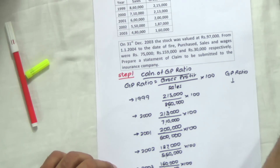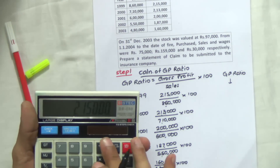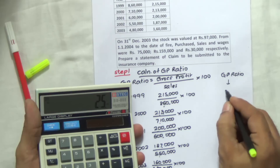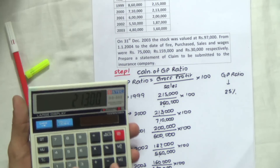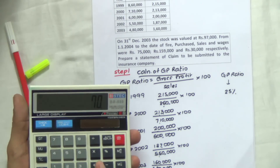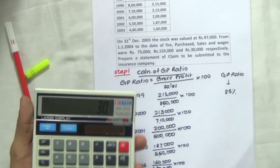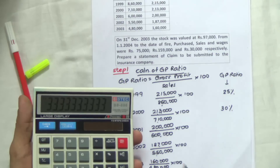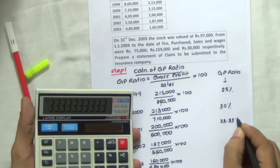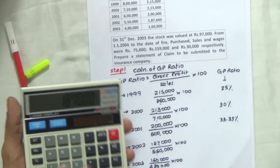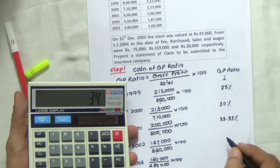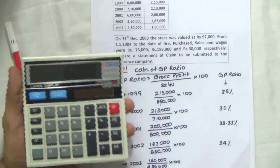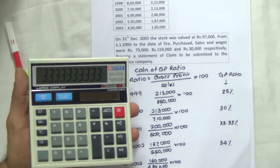Using the calculator: 2,15,000 divided by 8,60,000 into 100 is 25%. 2,13,000 divided by 7,10,000 is 30%. 2,00,000 divided by 6,00,000 is 33.33%. 1,87,000 divided by 5,50,000 is 34%. The last one — 1,60,000 divided by 4,80,000 — is 33.33%.